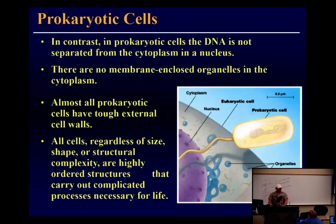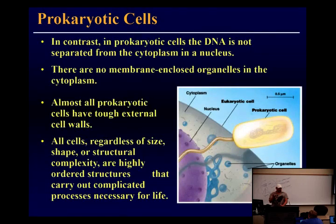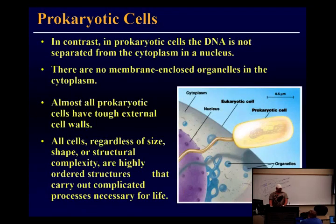Do you guys remember what those requirements are? Homeostasis — maintaining a relatively constant internal environment. Growth. Reproduction. Order. Make sure you know those because I can easily ask you that on a test. It's a multiple choice test, so as long as you can identify them, you're good. It's important that we be able to define life.